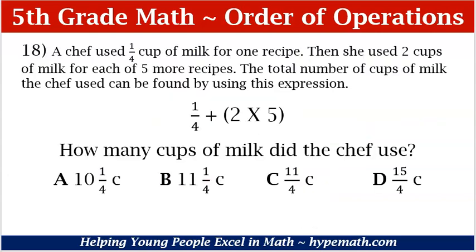Let's look at number 18. These problems are in our 5th grade math review workbook that can be purchased in our store — the link is in the description box. A chef used 1 fourth cup of milk for one recipe, then she used 2 cups of milk for each of 5 more recipes. The total number of cups of milk the chef used can be found by using this expression: 1 fourth plus, in parentheses, 2 times 5. How many cups of milk did the chef use? A. 10 and 1 fourth cup. B. 11 and 1 fourth cup. C. 11 fourths cup. Or D. 15 fourths cup.